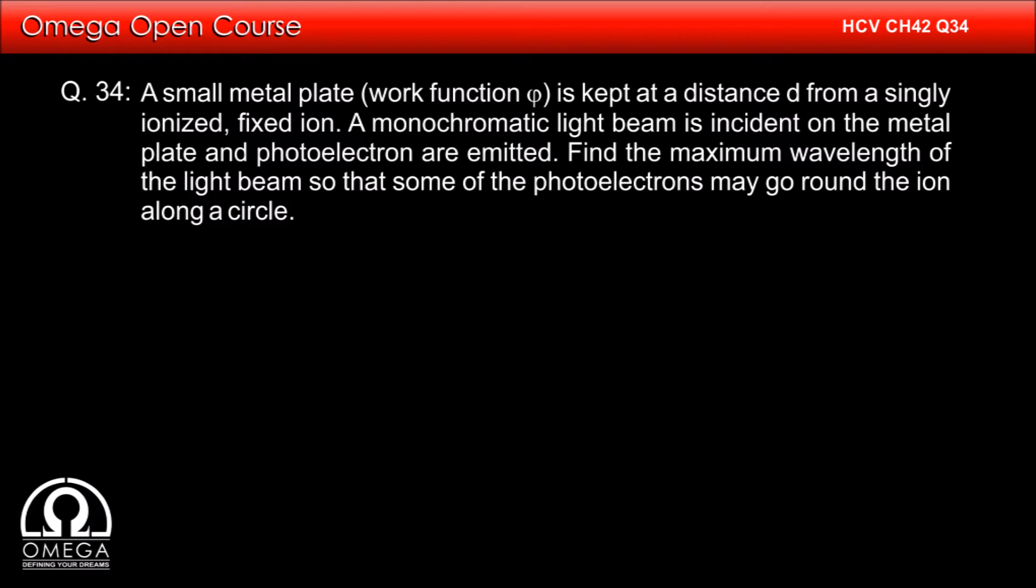A small sized metal plate of work function phi is kept at a distance d from a singly ionized fixed ion. A monochromatic light beam is incident on the metal plate and photoelectrons are emitted. Find the maximum wavelength of the light beam so that some of the photoelectrons may go round the ion along a circle.